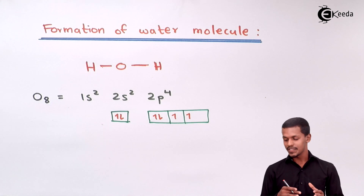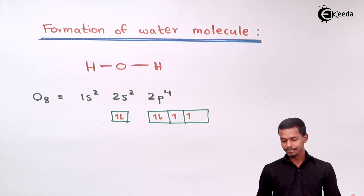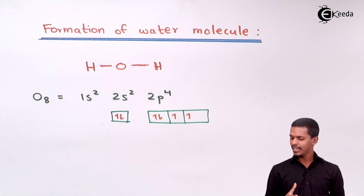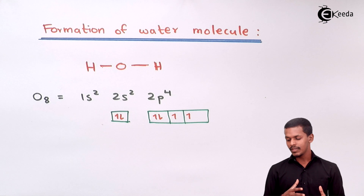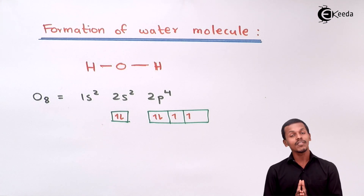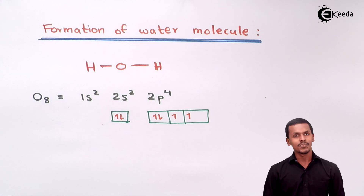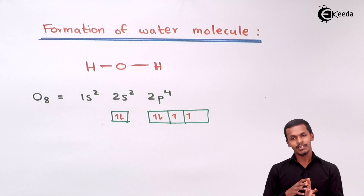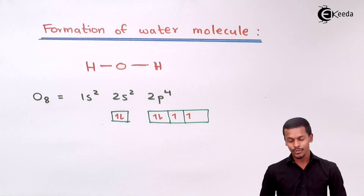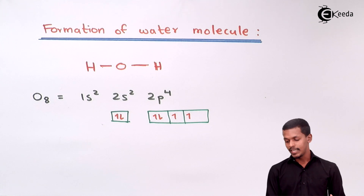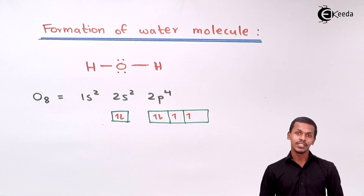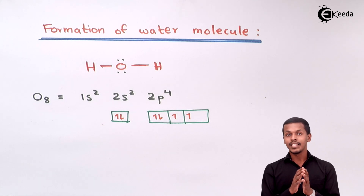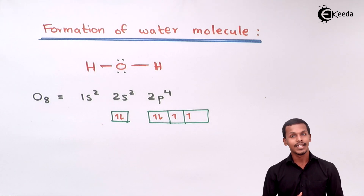It is essential to understand that there are 2 unpaired electrons present in the 2p subshell. According to valence bond theory, oxygen can therefore form 2 bonds with hydrogen. Now, oxygen consists of 2 lone pairs of electrons, and I am mentioning them here because they will play a vital role in giving geometry to the water molecule.